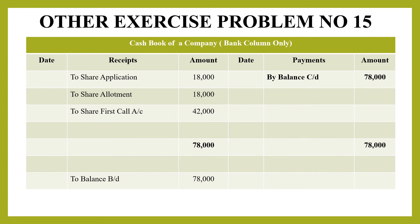Next, cash book — that is the bank column mentioned. If you have any payment, just receipts: share application money 18,000 received, share allotment money 18,000 received, and share first and final call 42,000 received. So the total will get 78,000. That has to be balanced on the payment side as by balance carried down, that is 78,000, and again that has to be brought down to the next year as balance brought down 78,000, and grand total on both sides also 78,000.